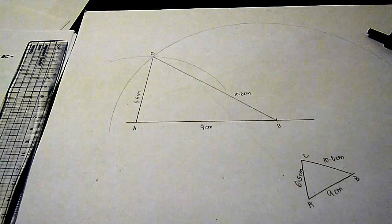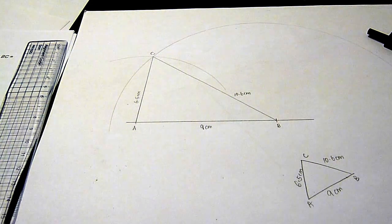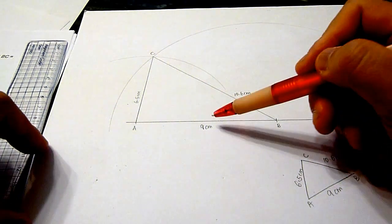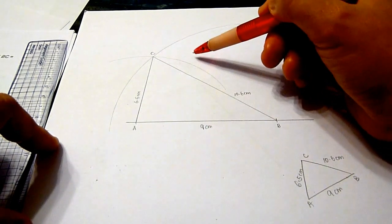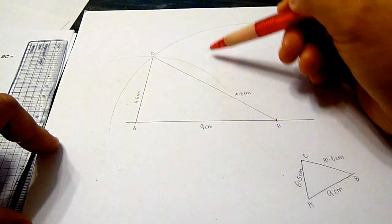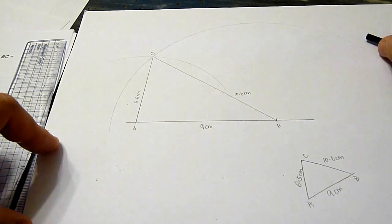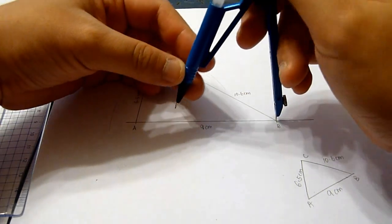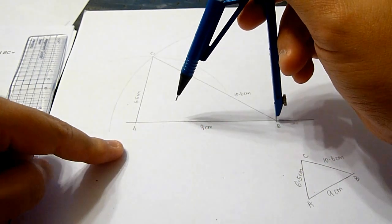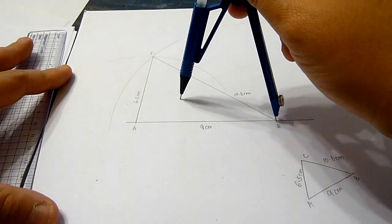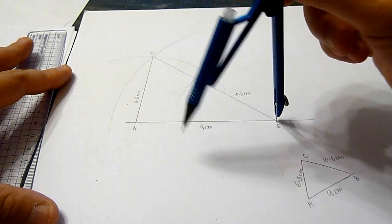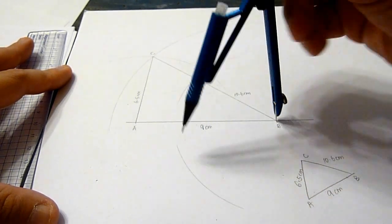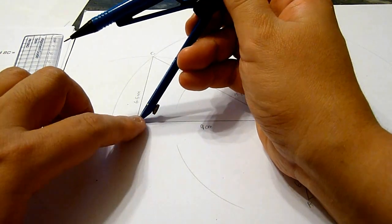To construct a perpendicular bisector of the side AB, which is here, we are expecting a perpendicular bisector to come down in this manner. Using a compass, I will stretch it such that it is more than half of the length AB and will mark two arcs from each end.